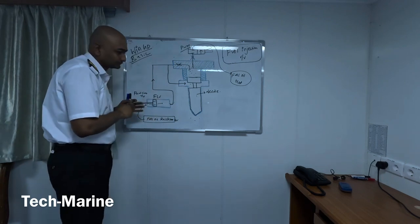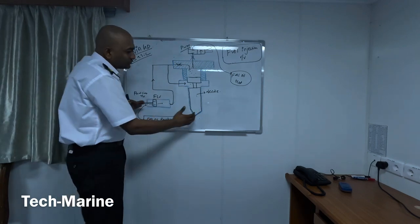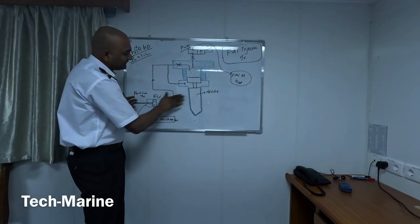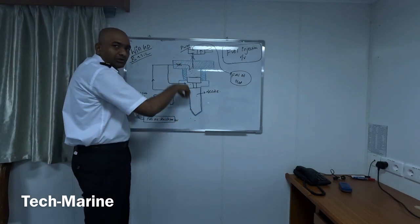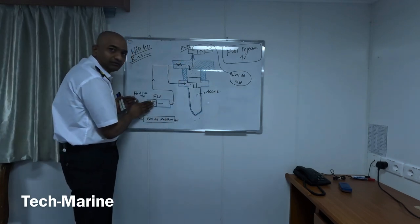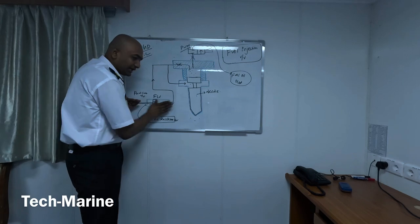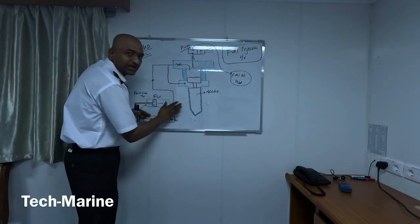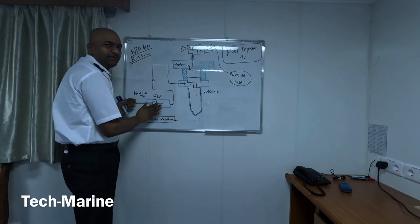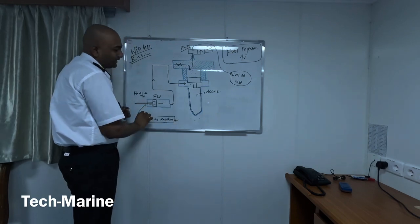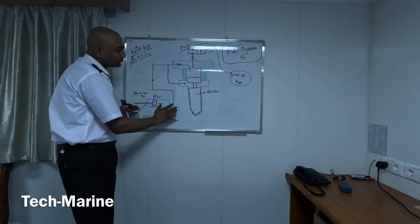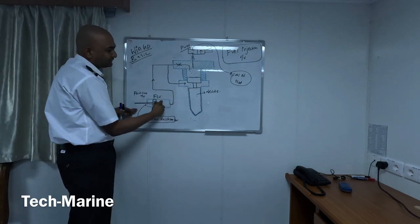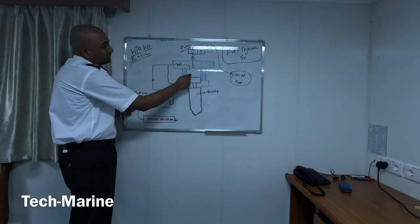Because of this back pressure the flow limit valve moves. Engineers, to summarize: when the needle valve lifts and closes, the FLV piston moves right and left. When the needle lifts and closes, the FLV moves right and left because of the back pressure and the pressure in the fuel line.